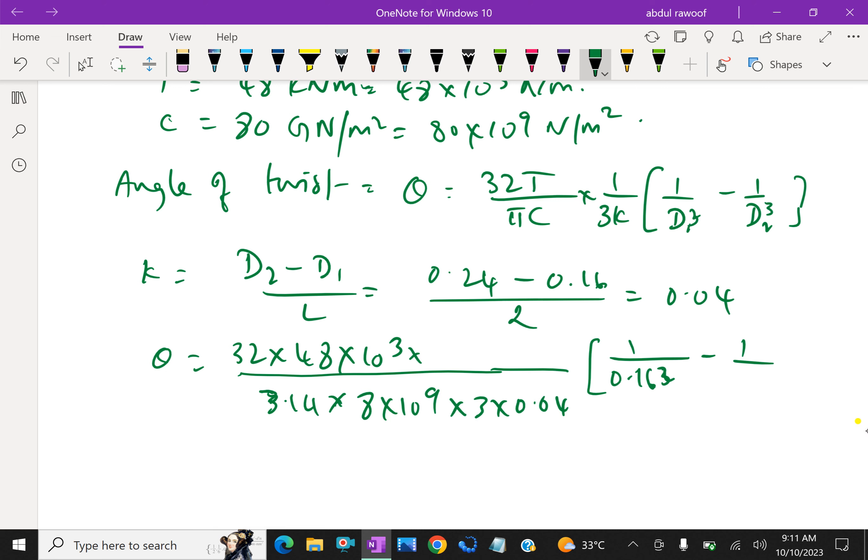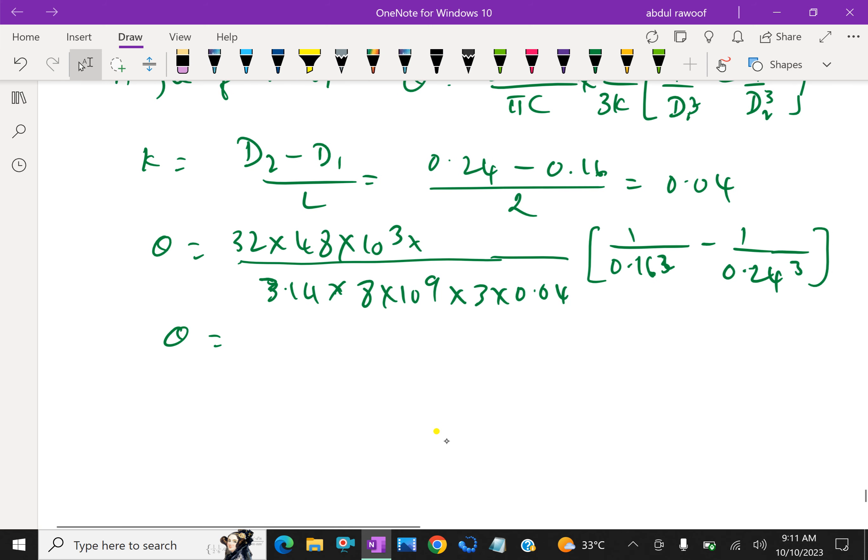Then the final value is theta equal 0.00875 radians, which is converted to degrees: 0.00875 times 180 by π, so 0.501 degrees.